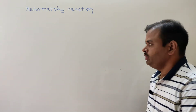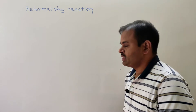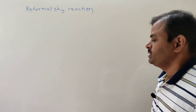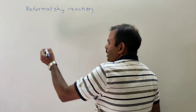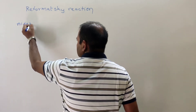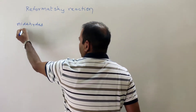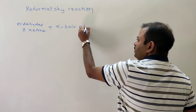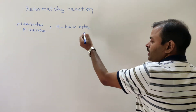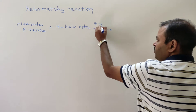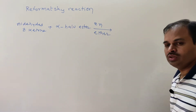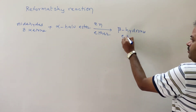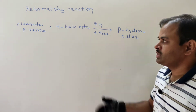Welcome to Master Chem Academy. Today we present the Reformatsky reaction, a very important name reaction. Aldehydes and ketones react with alpha-haloester — generally alpha-bromoester — in the presence of zinc and ether to give beta-hydroxyester. This conversion is known as the Reformatsky reaction.